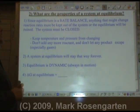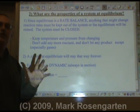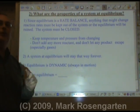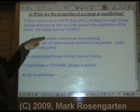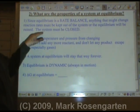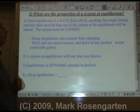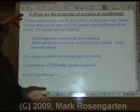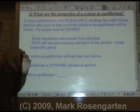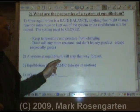The properties of a system at equilibrium: because it's a rate balance, anything you do that might change one rate over the other will mess up your equilibrium. So you need to keep the equilibrium in a closed system, keep temperature and pressure from changing, you can't add any more reactant, and you can't let any product escape — especially gases. Put a cork on it, put a stopper on it, prevent anything from happening, and you'll keep that system at equilibrium forever.